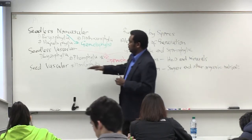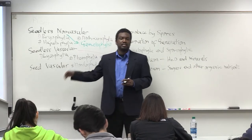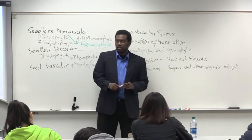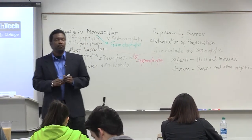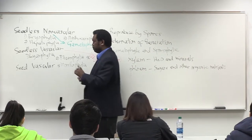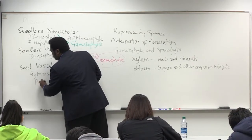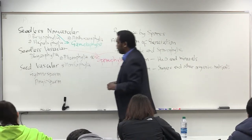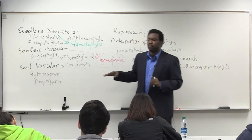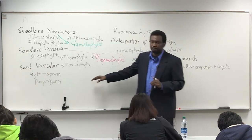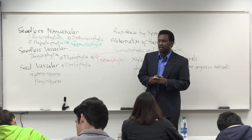The seed vascular plants are the final group — let's call these the most advanced, because in terms of sheer numbers, size, and longevity, they dominate. We have two categories of seed plants: gymnosperms and angiosperms. The gymnosperm has four divisions, four phyla, and the angiosperm has one phylum, but angiosperms outnumber all other plant groups.